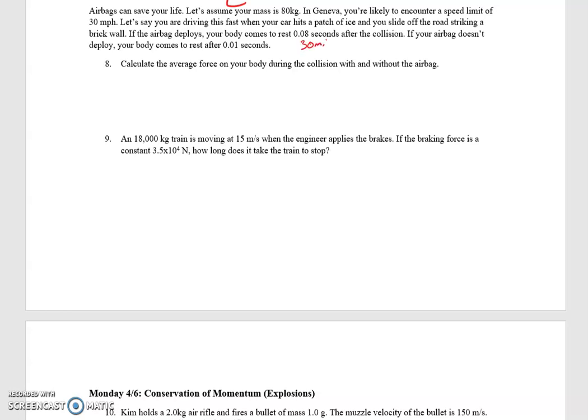So 30 miles per hour, we have to change that into meters per second. So I looked up a conversion, there's 1.6 kilometers in a mile. And in 1 kilometer there's 1,000 meters. And in 1 hour there's 3600 seconds. So 30 miles per hour is 13.3 meters per second. So we're going to do it with an airbag. Let's do that first. We've got FT equals M delta V. So F times 0.08 equals mass 80, final velocity zero minus your initial velocity of 13.3.